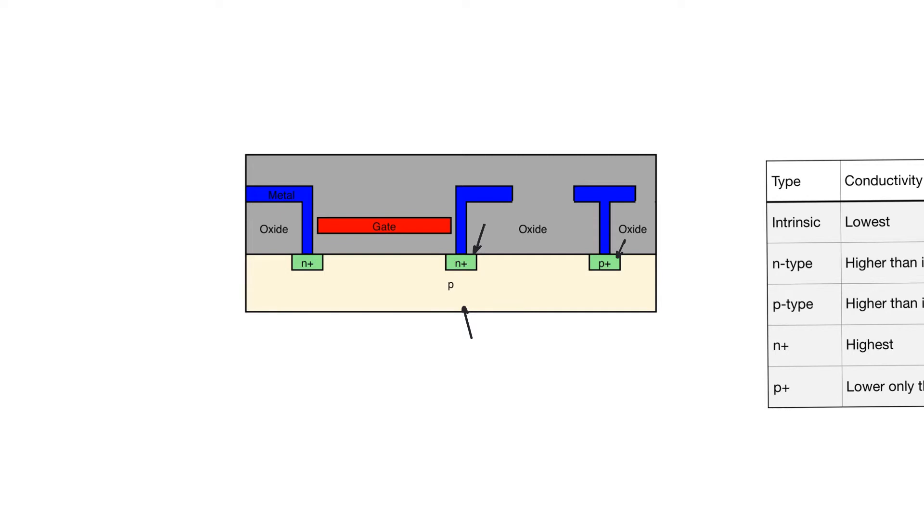So we know that the drains and sources of NMOS transistors form P-N junctions with the body. And these P-N junctions in correct operation need to be reverse biased. And so to do this, we have to connect the bodies to ground. Any connection is going to be made using metal wires. So if you imagine that you have an NMOS transistor, and it has a body terminal, we are going to use a metal wire to connect this body to ground.